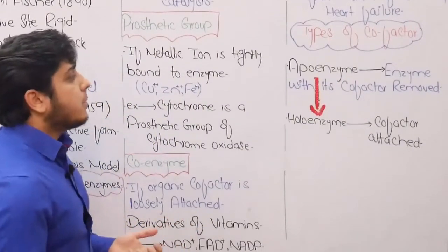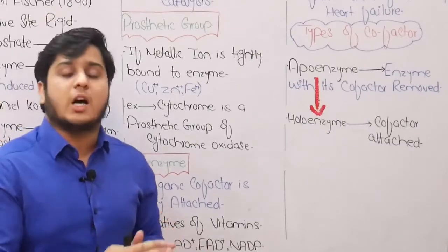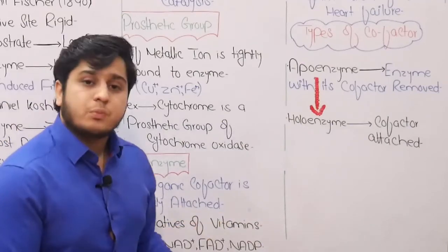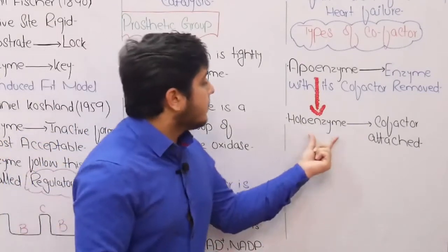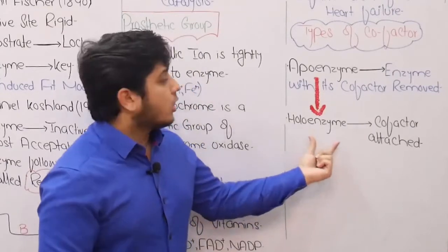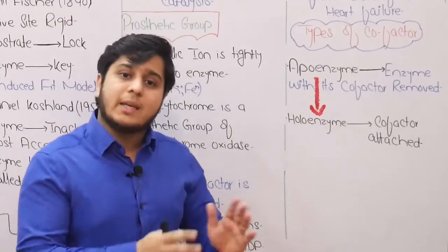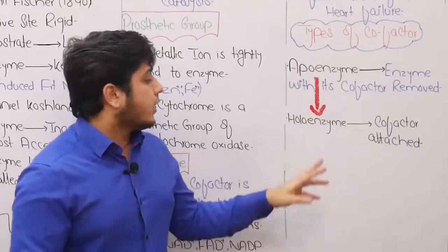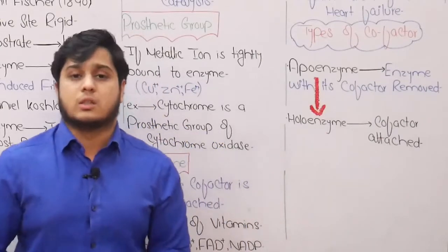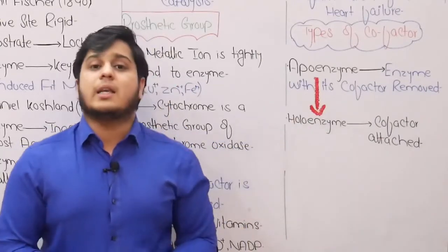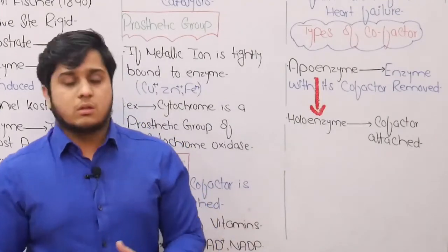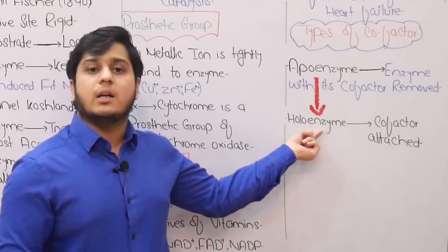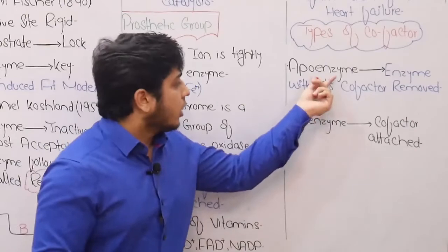Cofactors further categorize enzymes into two types: apoenzyme and holoenzyme. If a cofactor is present and attached to the enzyme, it is known as a holoenzyme. If the cofactor is removed and the enzyme is in its protein-only form, it is called an apoenzyme. Remember, the apoenzyme can be converted into a holoenzyme. For MCQs: which enzyme is in active form without its coenzyme? The answer is the apoenzyme.